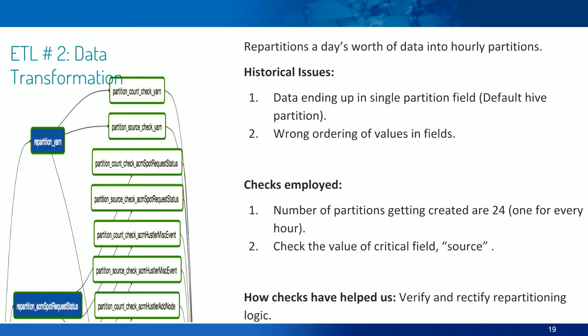The second ETL is data transformation. This repartitions a day's worth of data into hourly partitions, so at the end of a day we should have 24 hour-partitions. Historically we faced issues like data ending up in a single partition, wrong ordering of values, and data corruption. The checks we now employ are: after a day's run, we verify that the partitions created are indeed 24; we also check the value of critical fields like 'source' — since this is repartitioned yarn data, the source should only be 'yarn' and nothing else. These checks have helped us rectify our repartitioning logic.